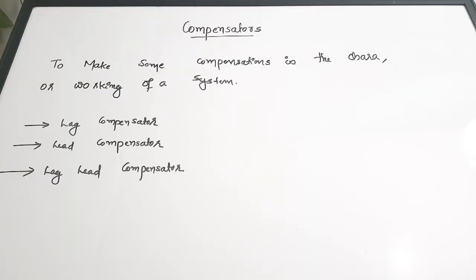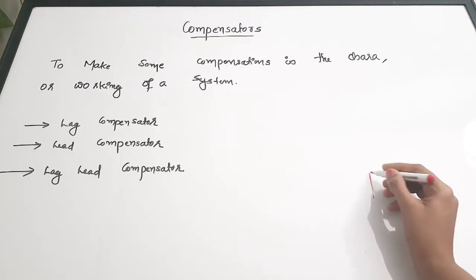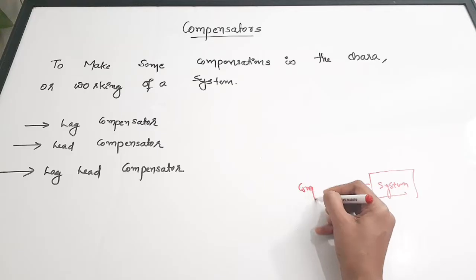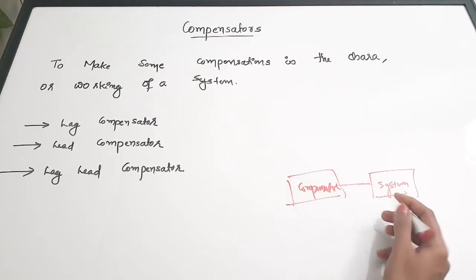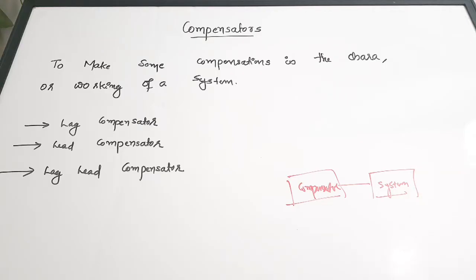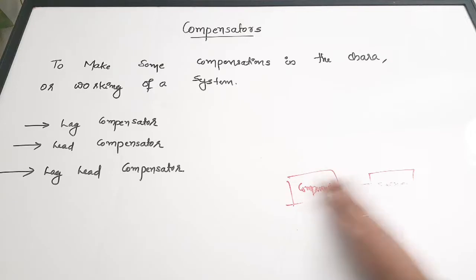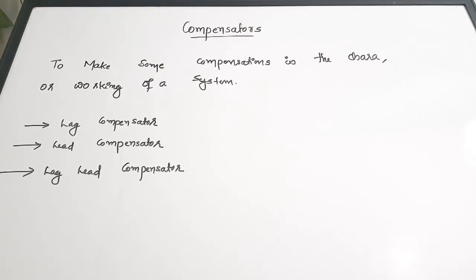This video is a quick revision of the compensators in control system. In the previous video we discussed all controllers — P type, PI type, PD type, and PID controller. In this video we will be discussing about the compensators. Compensators are electrical circuits used to make some compensations in the characteristics or working of a system. Generally, we use compensators to have adjustments in the phase, so these are generally phase compensators.